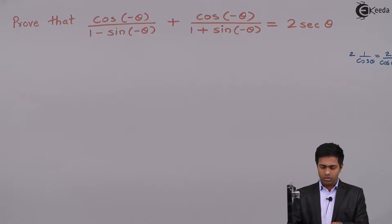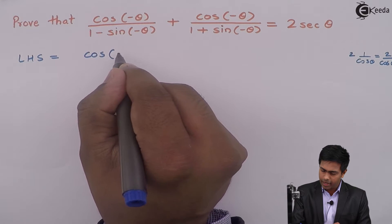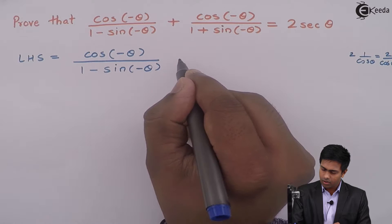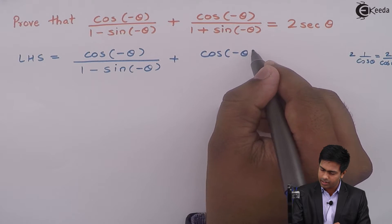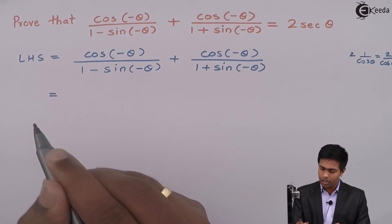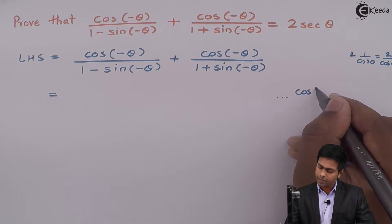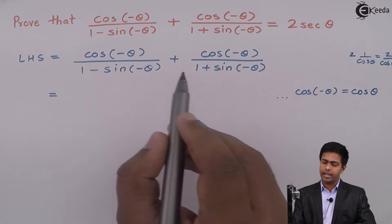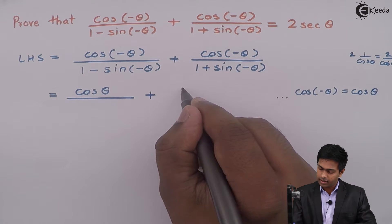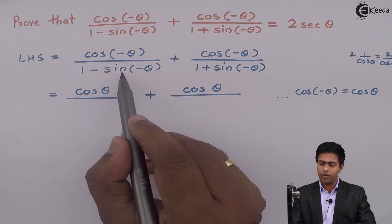So LHS is equal to cos(-θ) / (1 - sin(-θ)) + cos(-θ) / (1 + sin(-θ)). Now we have a formula for cos(-θ): cos(-θ) = cos θ. I will apply this formula in the numerator, so here we get cos θ and here also we get cos θ. Now in the denominator we have the term sin(-θ).